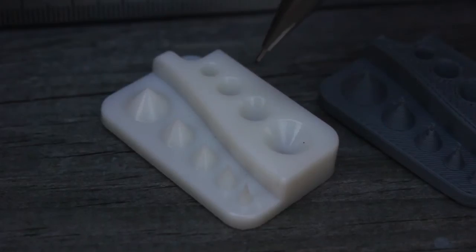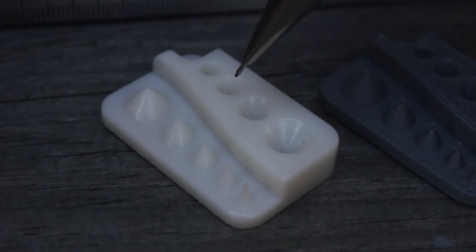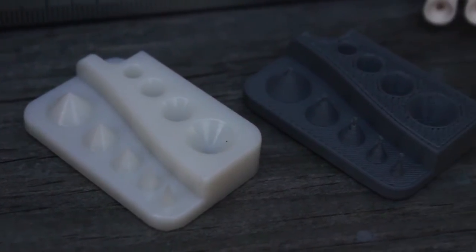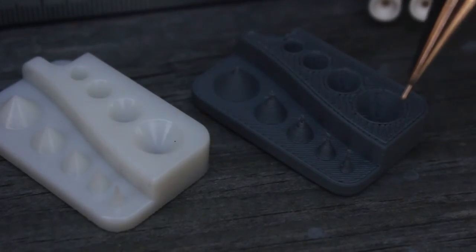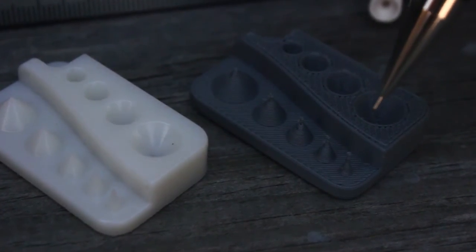This particular chip is actually an Object printer, which is known for its precision, and then this chip over here is done with an FDM printer called the Dimension Printer. And you can see that it starts getting a little bit gnarled on the smallest of the spikes, which is 100 thousandths.